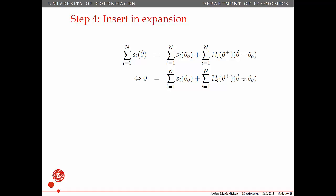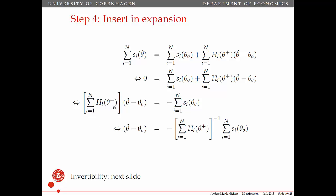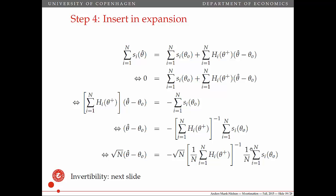Let's try and isolate theta hat minus theta naught. We start by moving this term to the other side and then multiplying by minus one. Now, we have this thing here that we want to move to the other side. To do that, we need this sum of matrices to be invertible — and we're going to show that on the next slide. Then we multiply by square root of n on both sides, divide by n here, and divide by 1/n in here, so that we have 1 over n and 1 over n, giving us actual averages, and we have the square root of n.